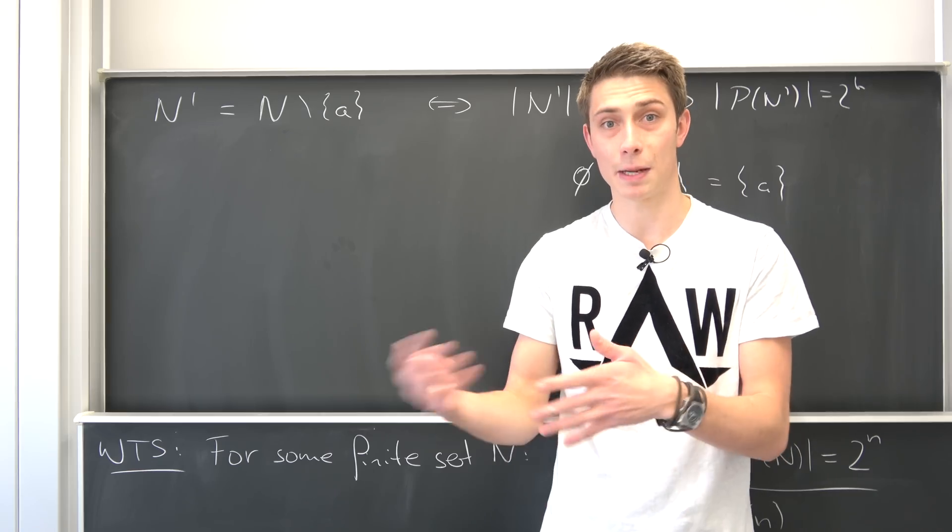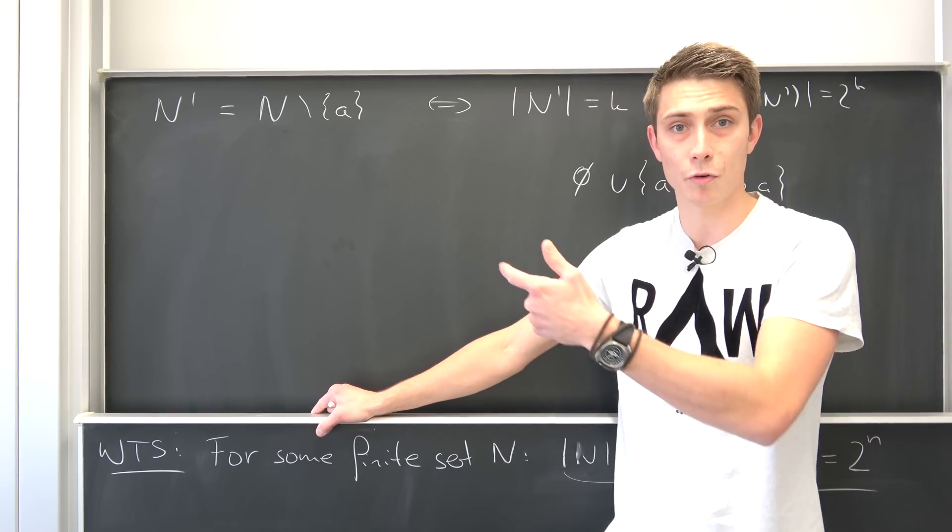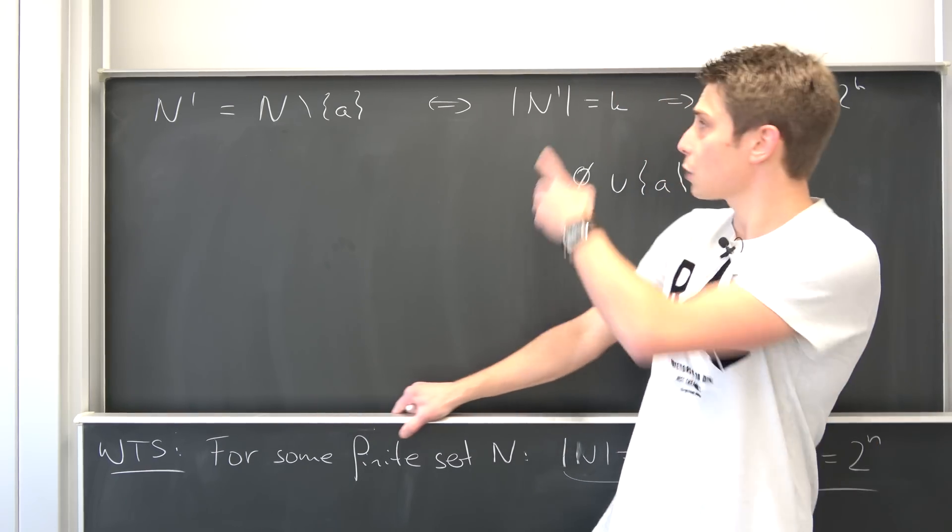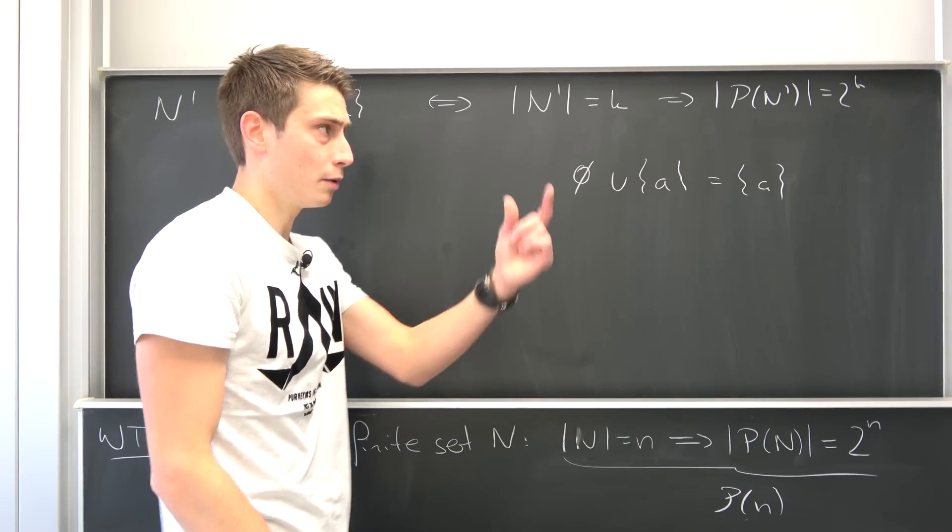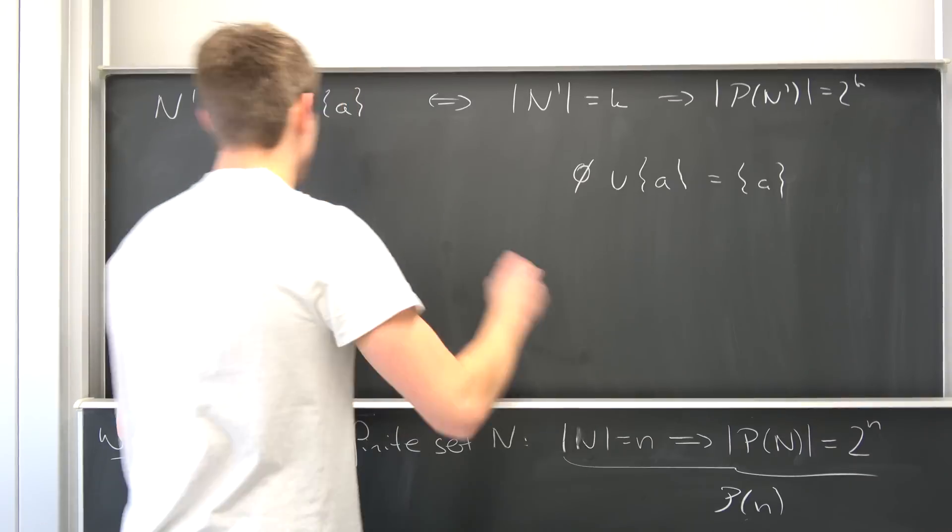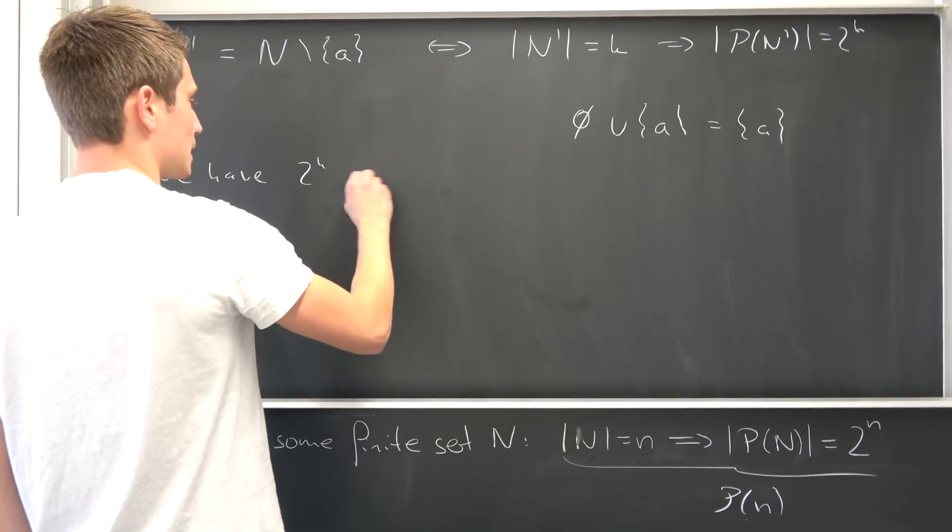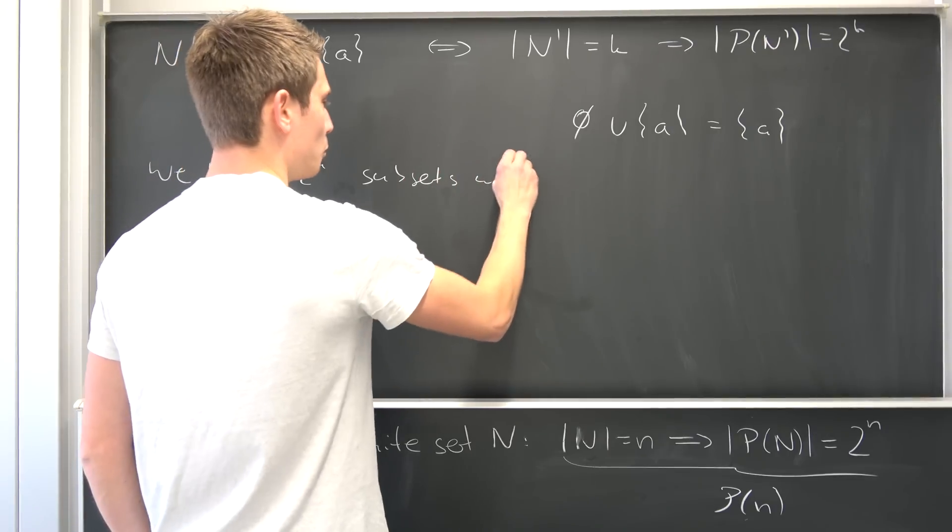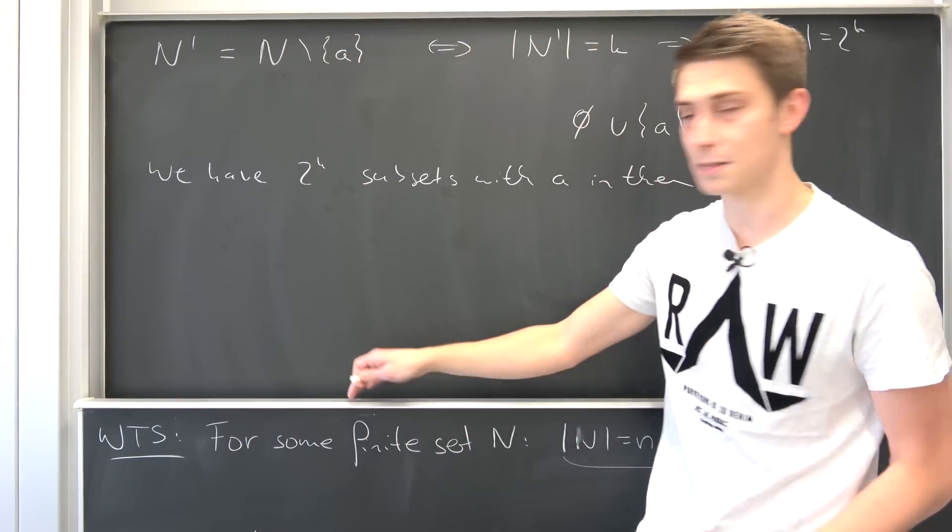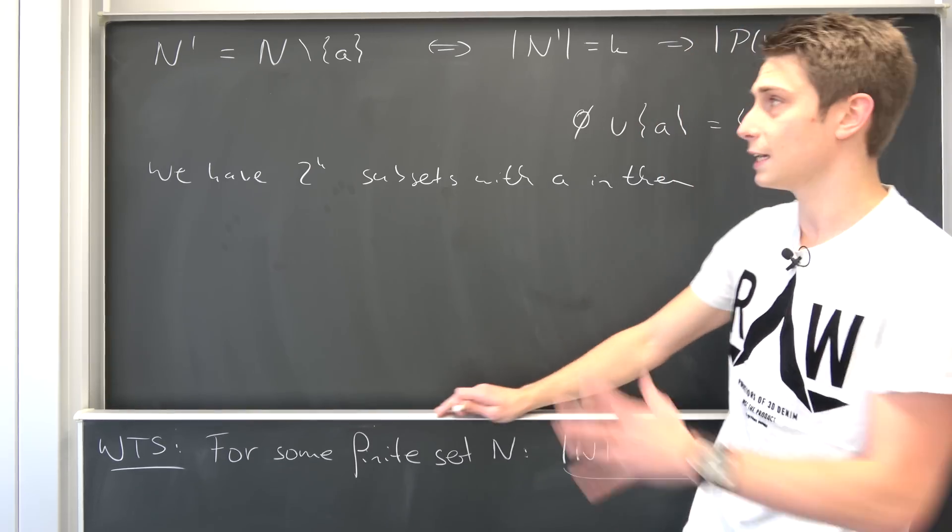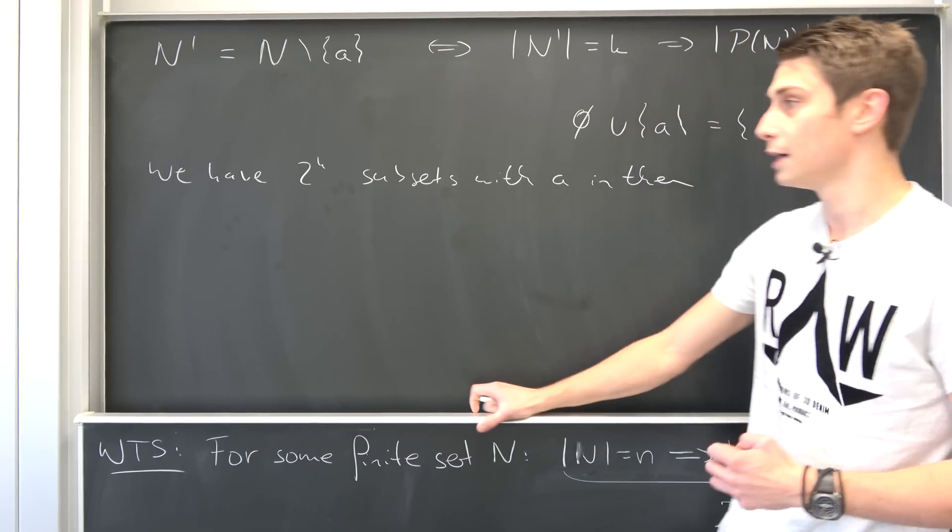Meaning we are going to have 2 to the kth power subsets of N with A in them. I hope it does make sense. It does make perfect sense. Try it out with a simple set, like two or three elements, remove one element from it, and then try this process out. Meaning we have 2 to the kth power subsets without A in them, and also we have 2 to the kth subsets with A in them. I hope this does make sense. It's really quite easy. It's a little bit abstract, but try it out with certain examples and it's going to make sense.